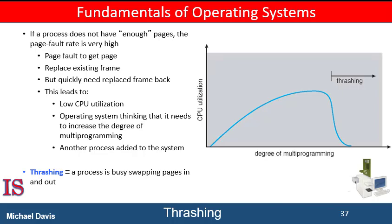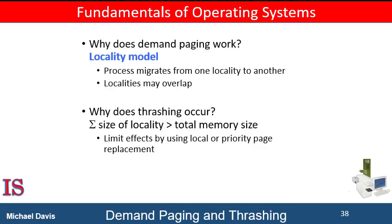To prevent thrashing, we must provide a process with as many frames as it needs. But how do we know how many frames it needs? One strategy starts by looking at how many frames a process is actually using. This approach defines the locality model of process execution. The locality model states that as a process executes, it moves from locality to locality. A locality is a set of pages that are actively used together. A running process is generally composed of several different localities which may overlap. For example, when a function is called, it defines a new locality. In this locality, memory references are made to the instructions of the function called, its local variables, and a subset of global variables.